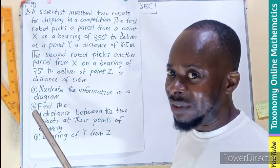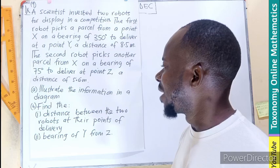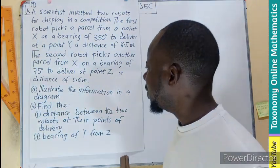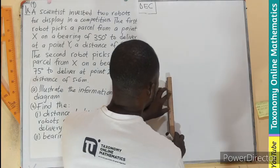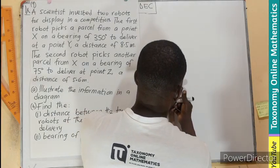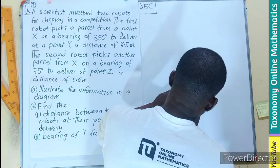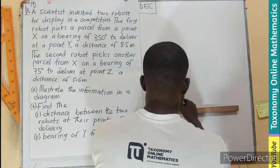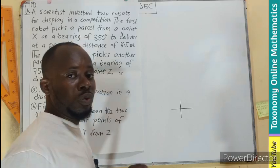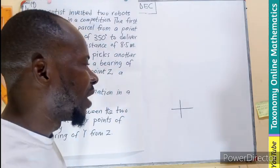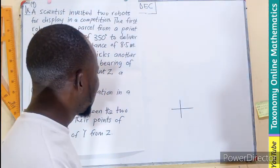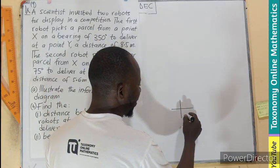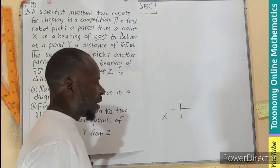This is vectors and bearings. So let's see how we can make the diagram for the first part. Let's indicate our Cartesian plane. It's not drawn to scale, so you can still use freehand to do that.